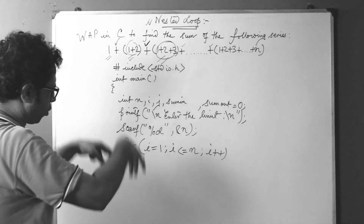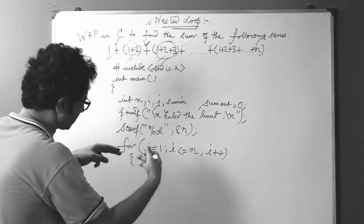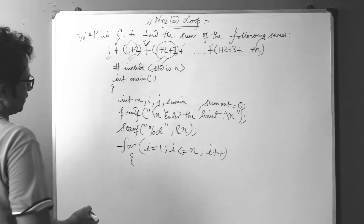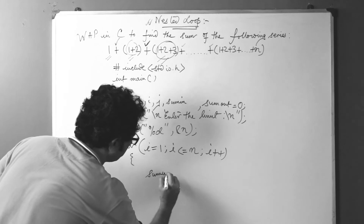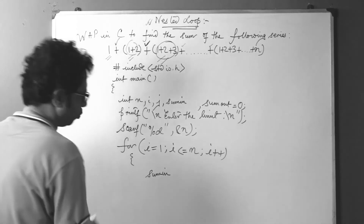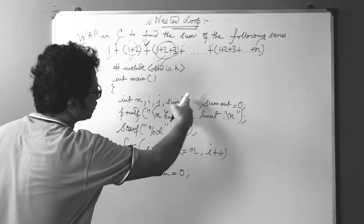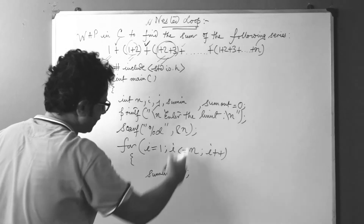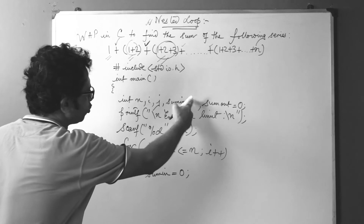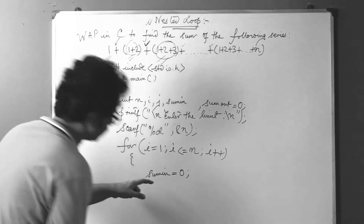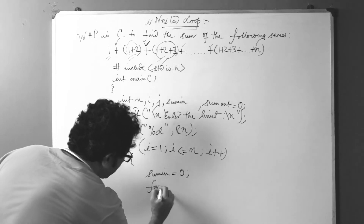Inside the outer loop, to cater for the nested inner loop, we first initialize sum_in = 0. This sum_in variable does not need initialization at program start — it is initialized here, at the top of the outer loop body, before we enter the inner loop.